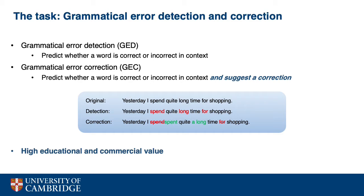While a GEC system is supposed to also propose corrections: the verb 'spent' should be used in its past tense form, a determiner is missing, and the preposition 'for' is not needed here. Finally, we have the corrected sentence: 'Yesterday I spent quite a long time shopping.'